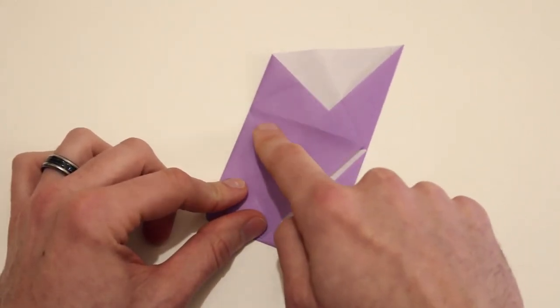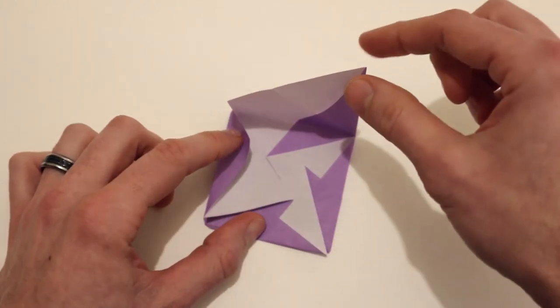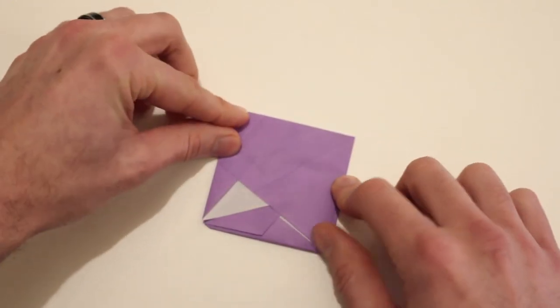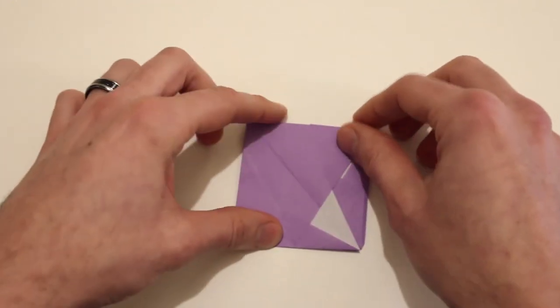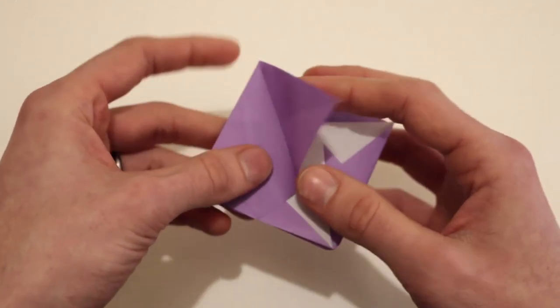Then rotate. Form all those same creases on this side. Bring that out, back in and fold it all down. And rotate. And the same thing here, but it will be just a little different.